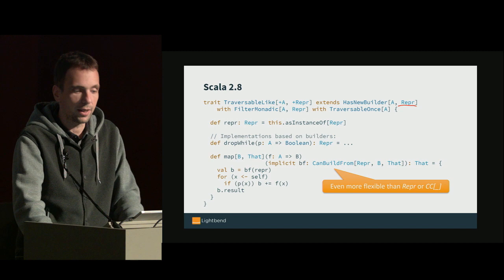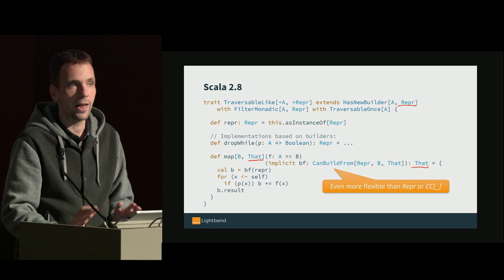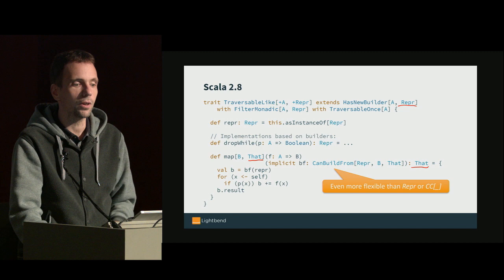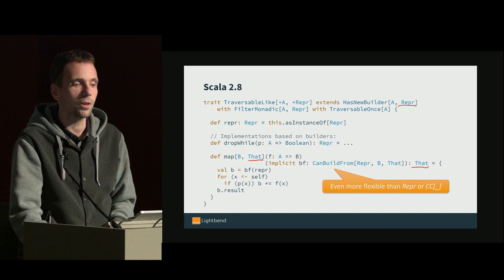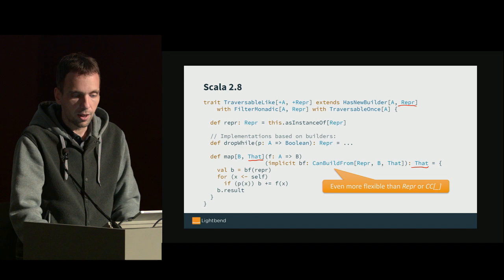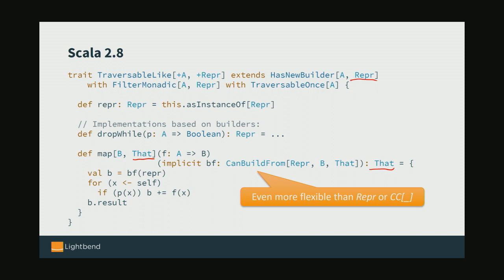TraversableLike also contains methods like map, which are even more flexible. You can see map has a type parameter That and returns a value of type That — it's computed through an implicit called CanBuildFrom. Whatever your specific type and element type B is, you have to find an implicit CanBuildFrom which tells you what kind of collection to build. CanBuildFrom gives you a builder you append to strictly and get the result. But the signature looks rather complicated and it's really hard to get the implementation right — you need exactly one most specific CanBuildFrom for each combination without ambiguities. It's a real mess in the implementation.